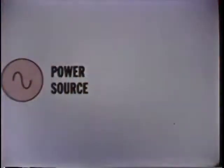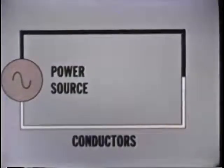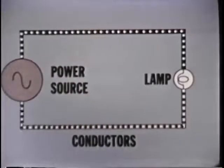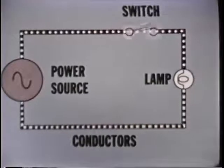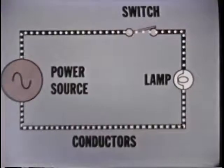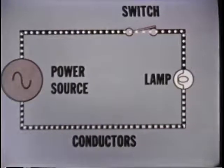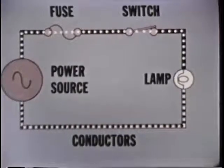An electric circuit is a path or a group of interconnected paths capable of carrying electric currents. An electric circuit exists when a source of power is attached through a pair of conductors to an electrical device, such as a lamp. Current flows from the power source through the conductors to the electrical device. To provide a measure of control, a switch is normally added to turn the circuit off and on. To protect the circuit from damage in the event of trouble, a fuse or circuit breaker is added to the circuit.